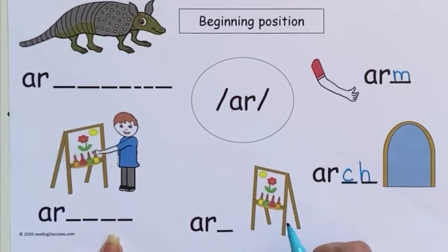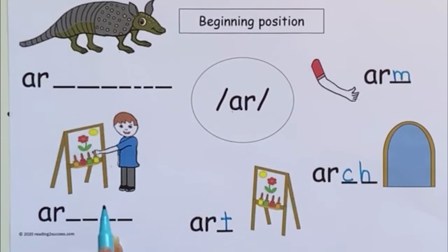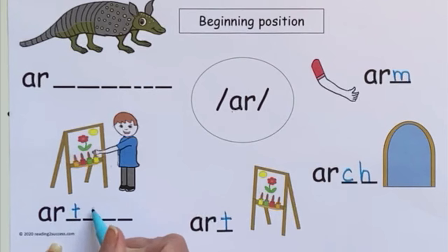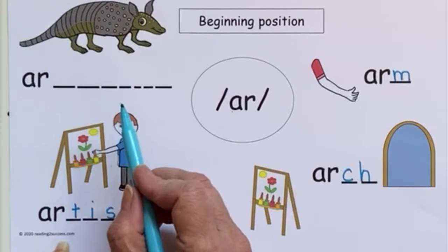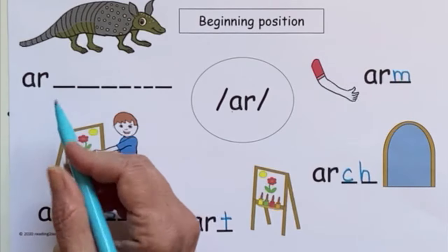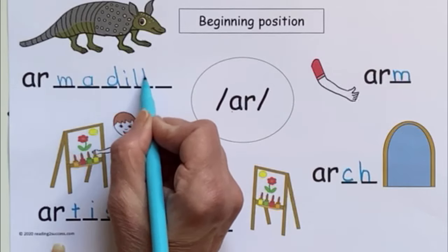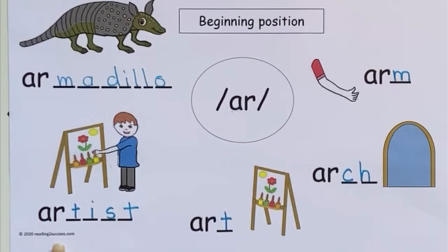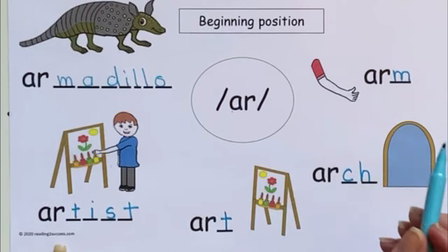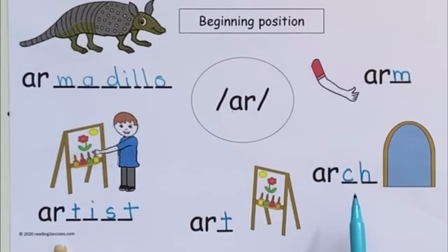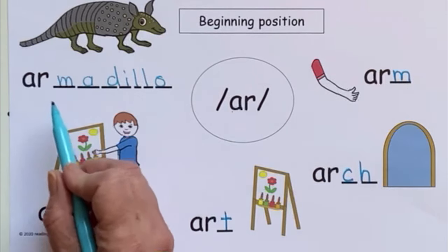This is showing someone's art — we have A-R and then add T, and the word is 'art.' This is a person who does art: an artist. We have A-R-T-I-S-T. And this is an armadillo — a kind of hard word. We have A-R and then add M-A-D-I-L-L-O. So our words with A-R at the beginning are arm, armadillo, arch, art, and artist.